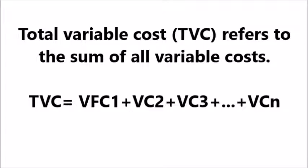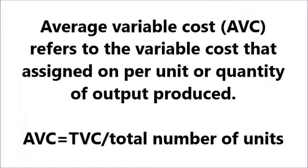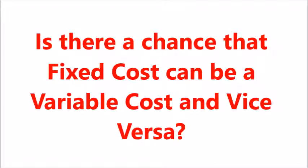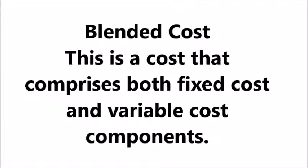A total variable cost refers to the sum of all variable costs. On the other hand, an average variable cost refers to the variable cost assigned on a per unit or quantity of output produced. Is there a chance that a fixed cost can be a variable cost or vice versa? Actually, the answer is yes, and this is what we call a blended cost — a cost that comprises both fixed and variable cost components.